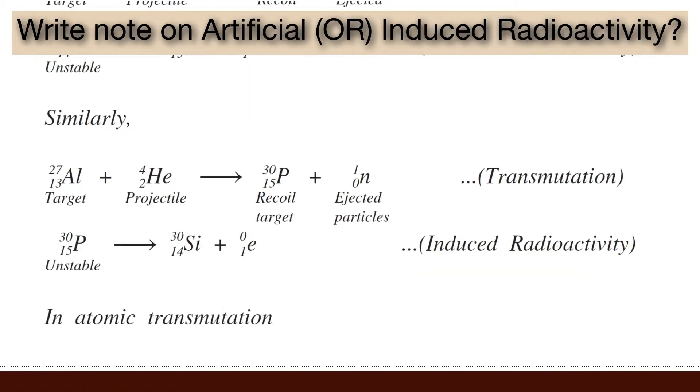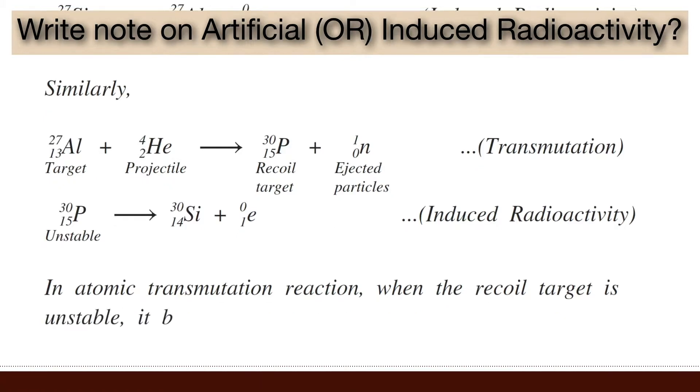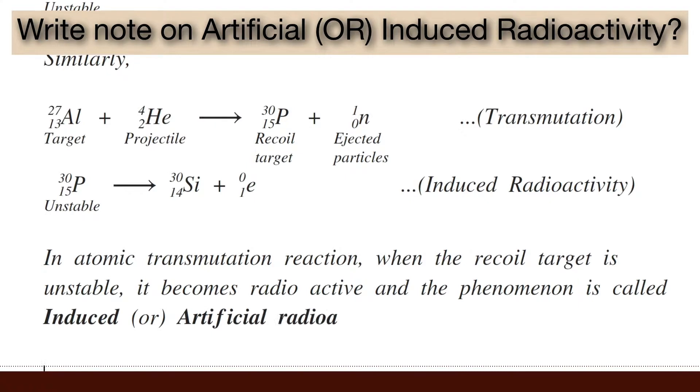In atomic transmutation reaction, when the recoil target is unstable, it becomes radioactive and the phenomena is called induced or artificial radioactivity.